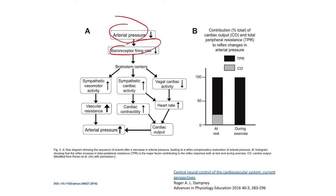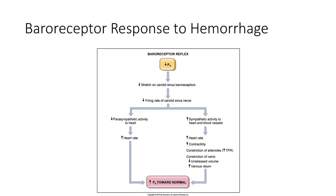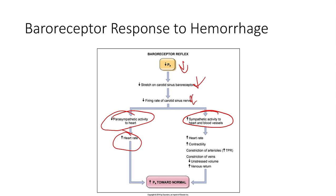The vasomotor centers are located in the medulla. They're responsible for cardiac electrical activity, myocardial performance, and peripheral vascular tone. The vasomotor centers in the medulla receive afferent input from the baroreceptors through the nucleus solitarius tract. In response to a hemorrhage, anything that's going to drop blood pressure will decrease the stretch on the baroreceptors, decrease the firing rate of those nerves, leading to higher sympathetic activity and a decrease in parasympathetic activity. This causes heart rate to increase, an increase in contractility, constriction of the vessels and veins — all to normalize blood pressure.